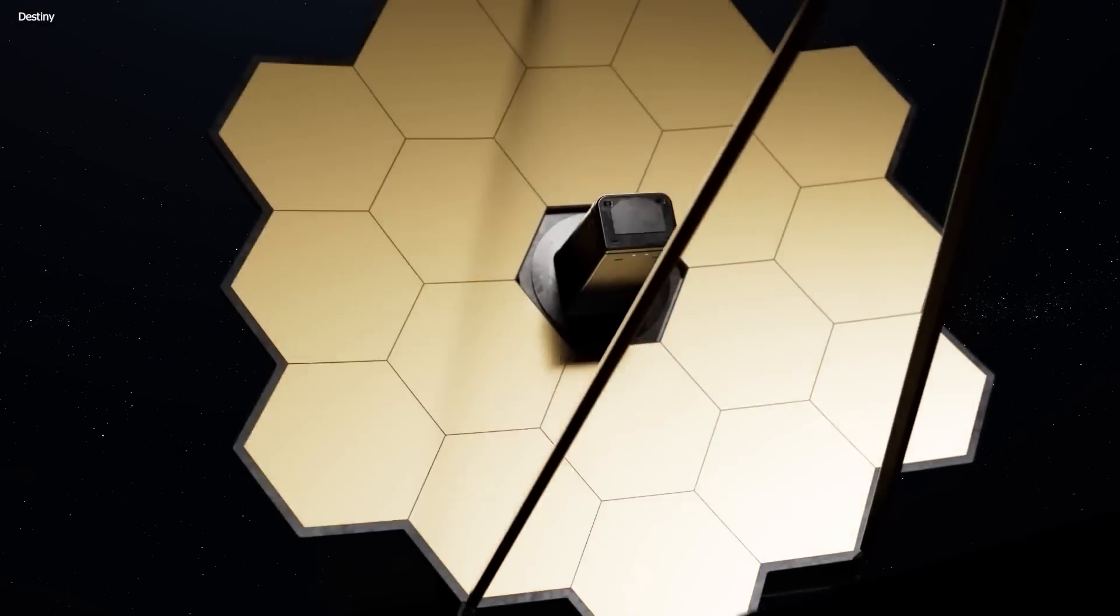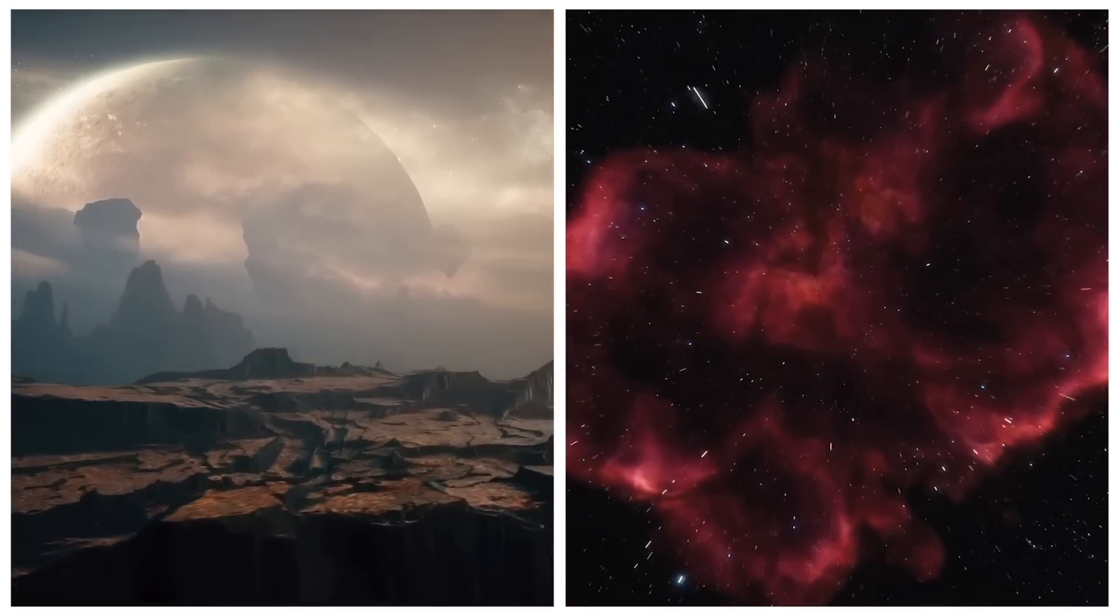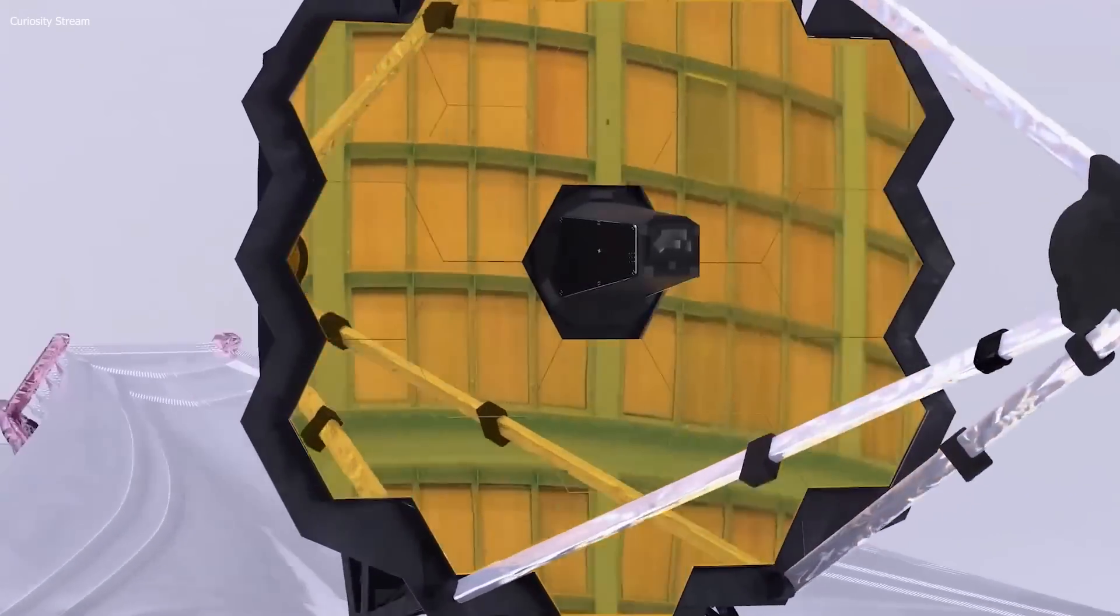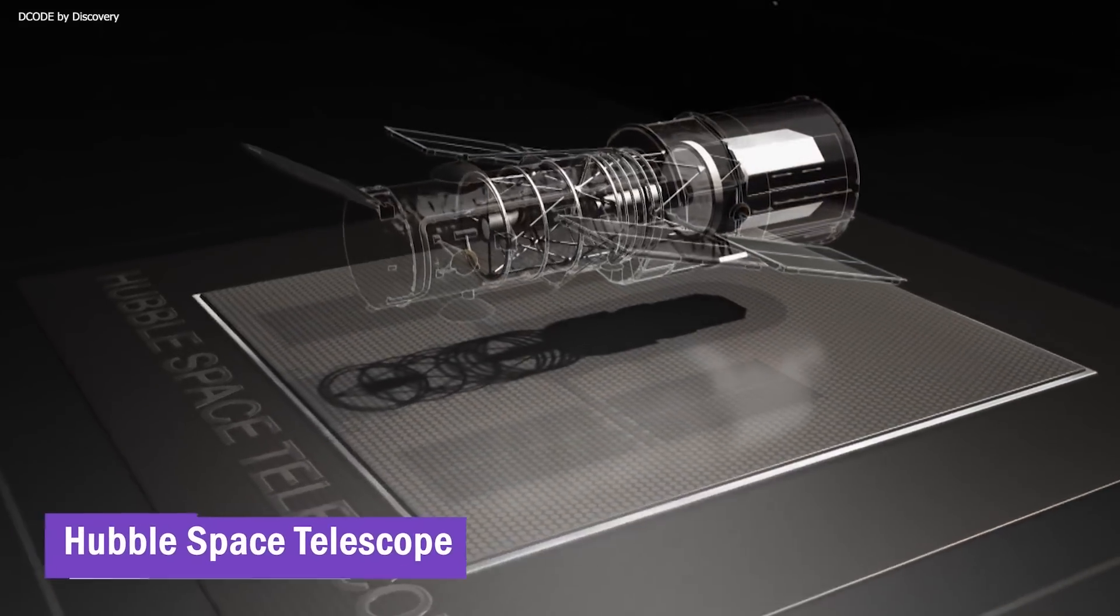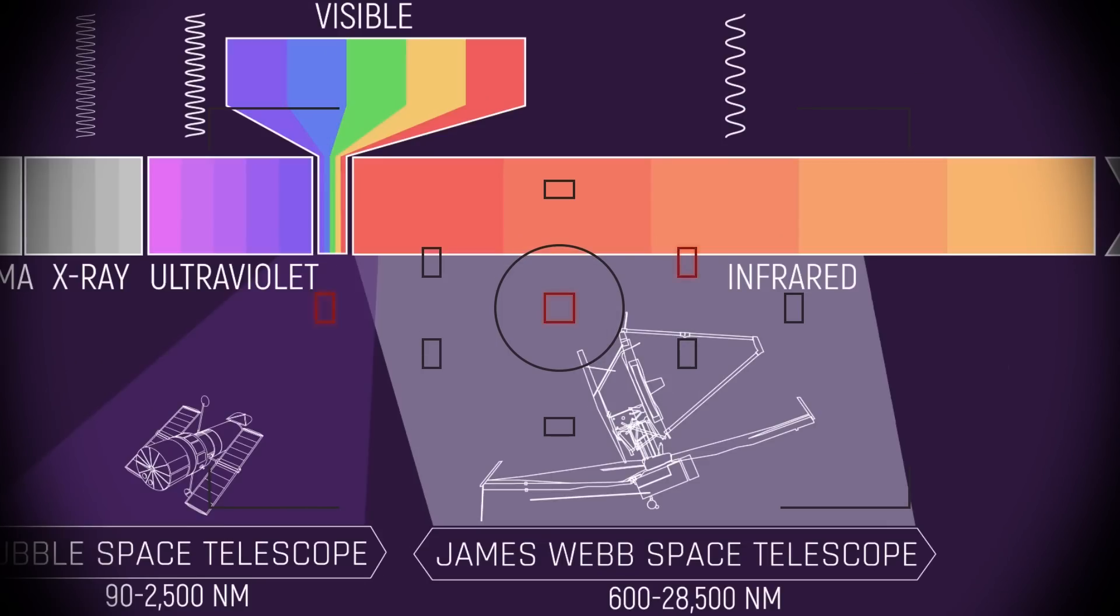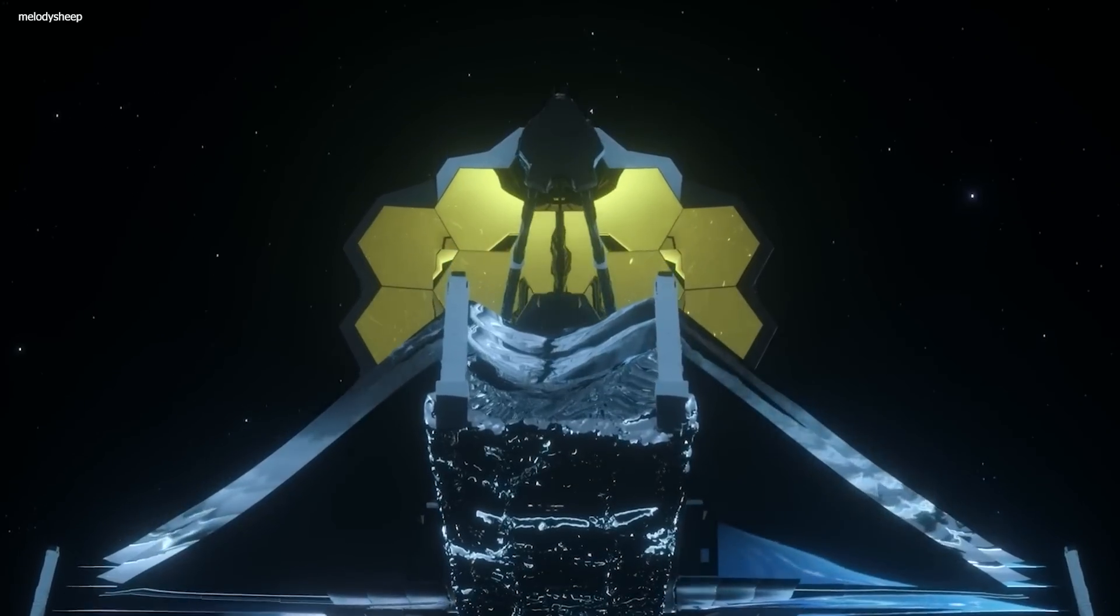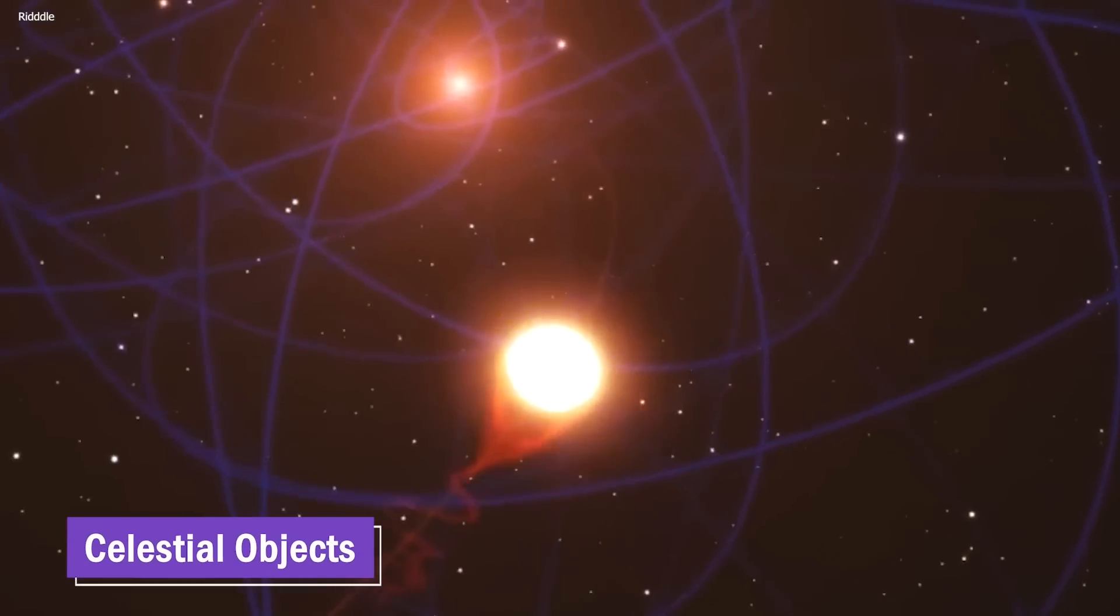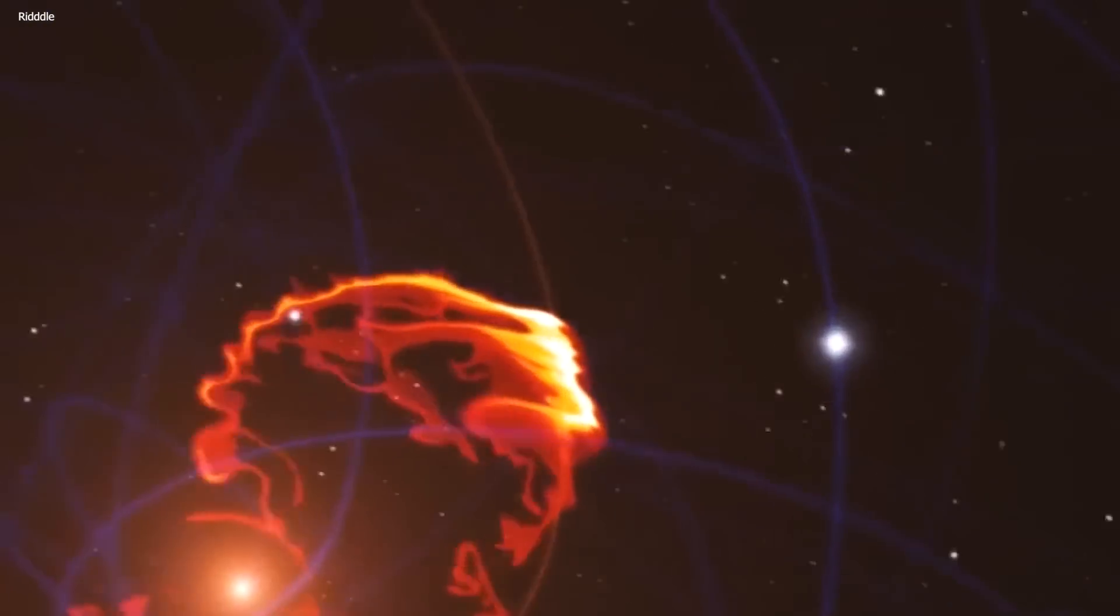The James Webb Space Telescope is a groundbreaking achievement in the field of space exploration and astronomy. Representing the newest generation of space telescopes, its capabilities surpass those of its predecessor, the Hubble Space Telescope. Since it's able to focus on the infrared portion of the electromagnetic spectrum, the JWST has got a unique advantage in studying celestial objects that emit longer wavelengths, thus enabling it to look deeper into the mysteries of the universe.